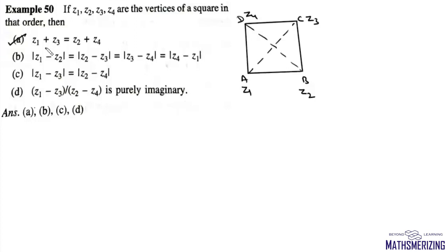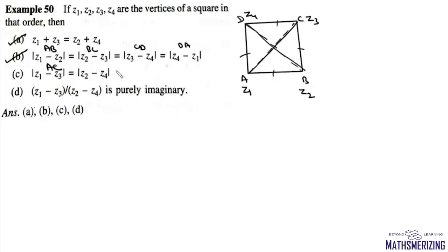Mod z1 minus z2 is the side AB, z2 minus z3 is BC, z3 minus z4 is CD, and z4 minus z1 is DA. All four sides of a square are equal, so option B is correct. Mod of z1 minus z3 is diagonal AC, and mod of z2 minus z4 is diagonal BD; both diagonals are equal, so option C is also correct.